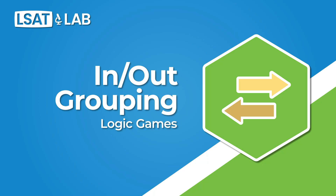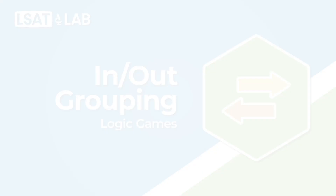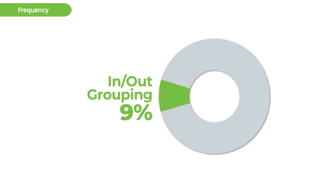Hi, this is Matt at LSAT Lab, and today's lesson is on in-out grouping games in the logic games section. In-out grouping games are a really important game type. They make up 9% of all logic games. And while it's not the biggest game type out there, it's an important one in that it sits at that intersection between medium and hard. It's something that's going to take a little bit of effort to work on, and some people struggle with the lack of concreteness that sometimes you might find in the game board.